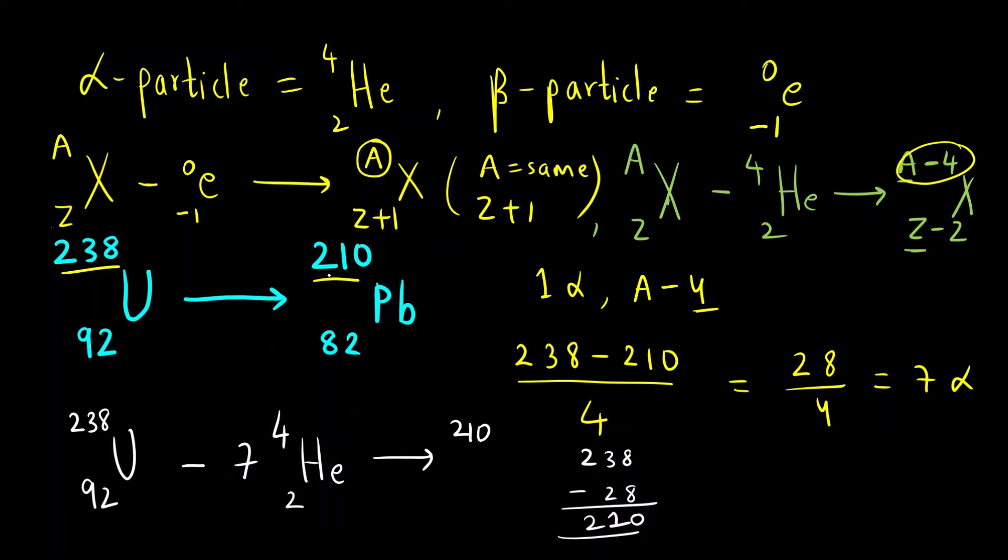You can see we have got the atomic mass that is given, 210. I don't know the element, so I will write it as X. And 92 minus 7 times 2 is 14. 92 minus 14 will be, 12 minus 4 is 8, 8 minus 1 is 7. So 78 is the atomic number.